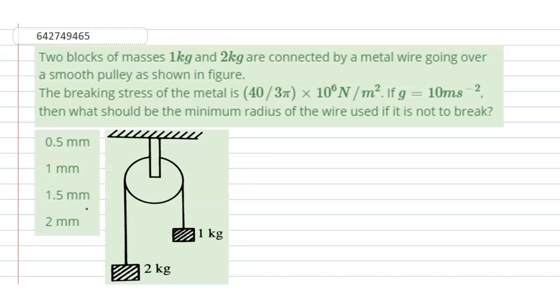If g equals 10 meter per second square, then what should be the minimum radius of the wire used if it is not to break? So from the diagram we can...